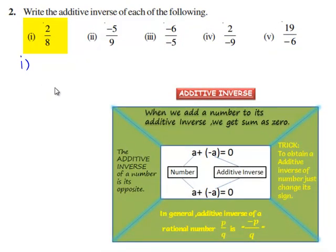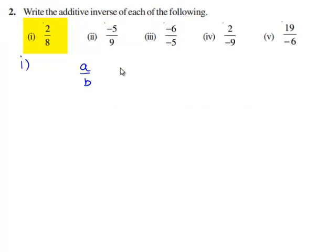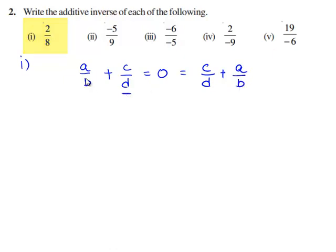For every rational number a by b, there exists another rational number c by d such that a by b plus c by d is equal to 0, which is equal to c by d plus a by b. Here, c by d is called the additive inverse of a by b, as well as a by b is called the additive inverse of c by d.